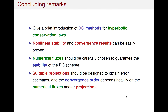In summary, we have discussed a brief introduction of DG methods. For solving hyperbolic conservation laws, the nonlinear stability and convergence results can be easily proved. From the analysis, we can see that the numerical flux should be carefully chosen to guarantee the stability of the DG scheme. Also, suitable projections should be designed to obtain error estimates, and the convergence order depends heavily on the choice of numerical fluxes and projections. Thank you.